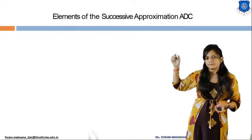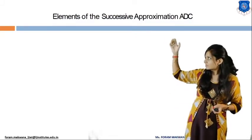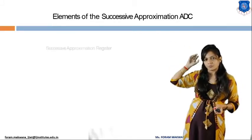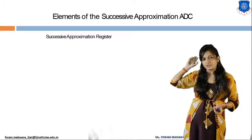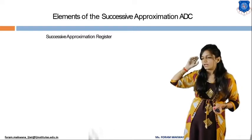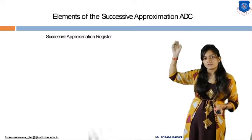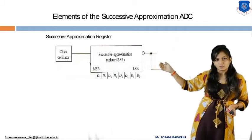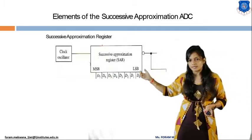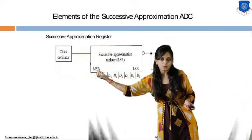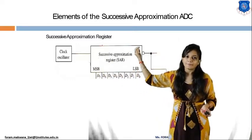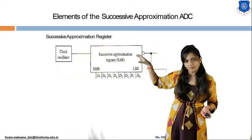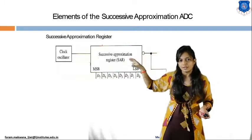Successive approximation is one of the most efficient methods of ADC. It has different elements; the first one is the successive approximation register (SAR), which has an 8-bit digital output. This SAR is triggered by the clock.